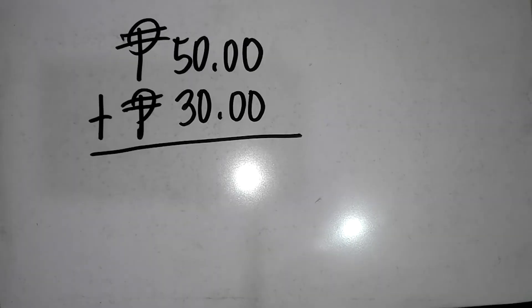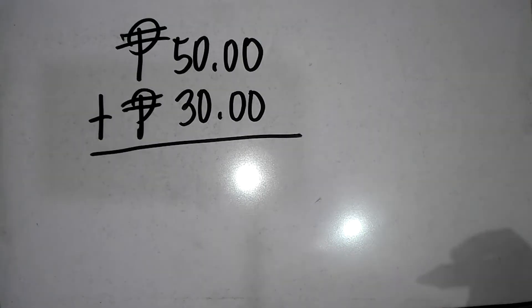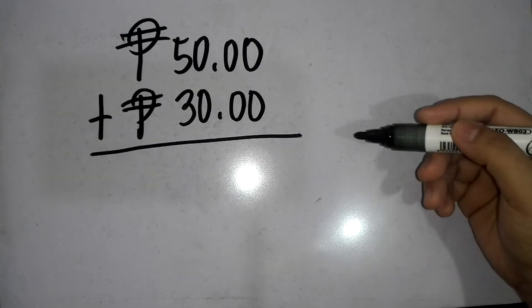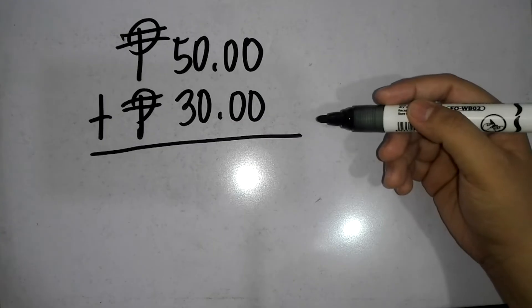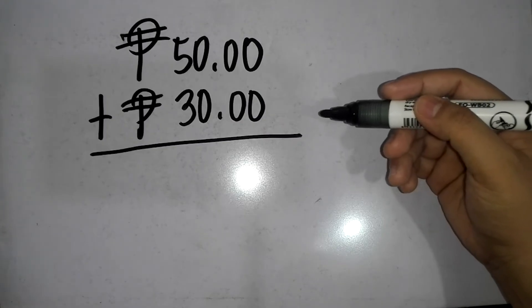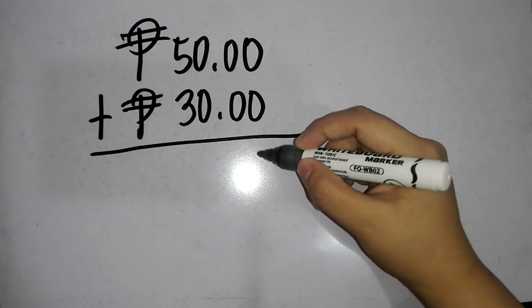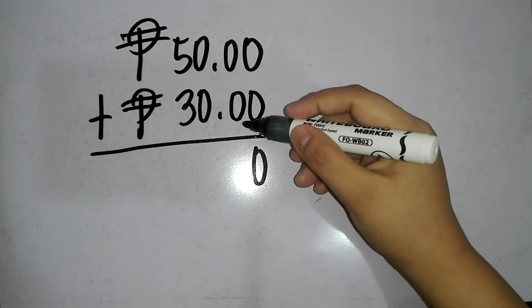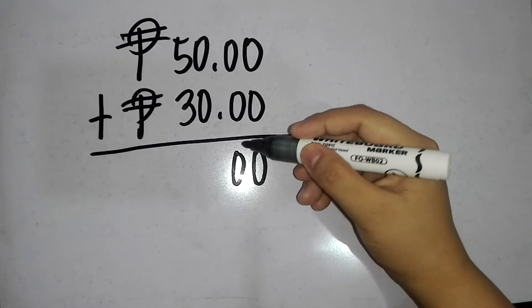For step 3, let's solve. Let's add 50 and 30. In adding numbers vertically, we start with the digits on the right, for the numbers in the least place value. 0 plus 0 is equal to 0. 0 plus 0 is equal to 0.